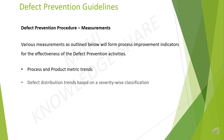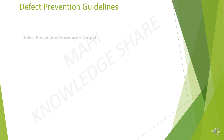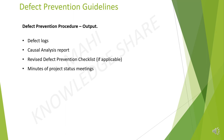Defect distribution trends based on severity-wise classification. Trends of major cost categories. Step 5: Output. At the end of the defect prevention cycle, we will collect the defect logs, causal analysis report, revised defect prevention checklist, and minutes of project status meetings.